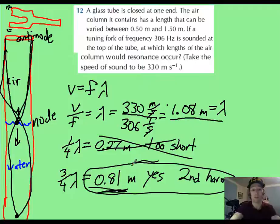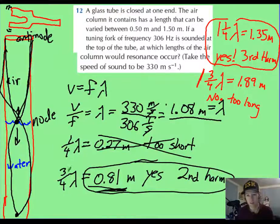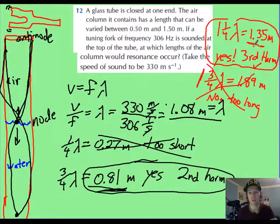And we want to make note that this is going to be at the second harmonic. Now you want to find out where else can it resonate. To finish this problem off, I said, well, you can also add another half-wavelength to it and put one-and-one-quarter wavelengths for resonance, and that turns into 1.35 meters, and that gives you your third harmonic. You can also go to one-and-three-fourths of a wavelength, but that ends up being 1.89 meters, which is longer than our tube can go. So you only end up with two different places within this length where you can get resonance.